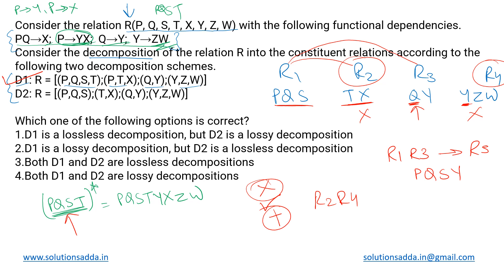The R2 and R4 merger cannot be performed. If R3 and R4 were merged via Y, R1 would be left out. There is no proper combination of these four relations that leads to a lossless decomposition. Therefore, decomposition scheme D2 is lossy. The conclusion is: D1 is lossless, D2 is lossy, and the correct answer is the first option.